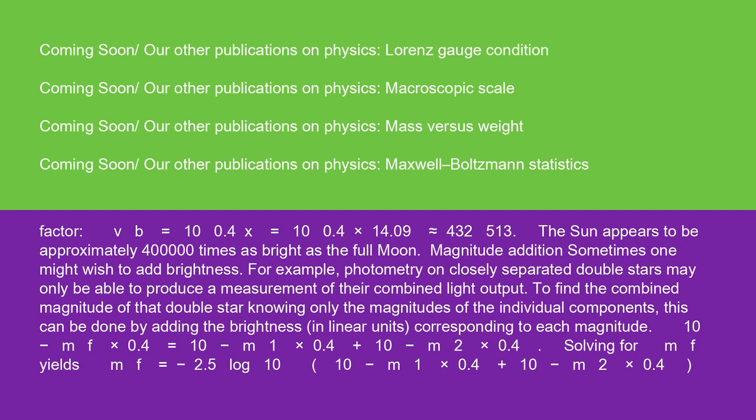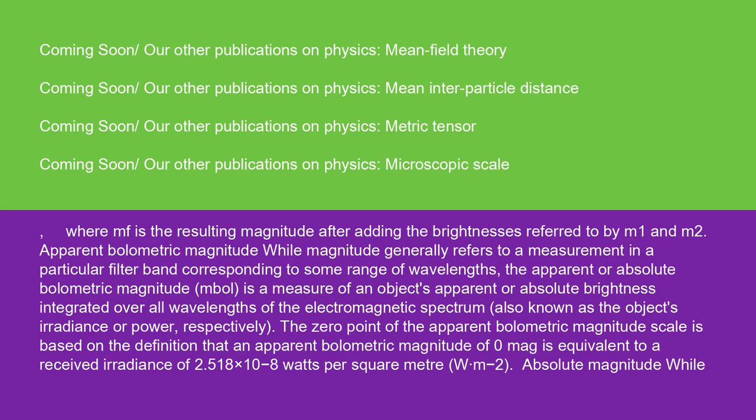Magnitude addition: Sometimes one might wish to add brightness. For example, photometry on closely separated double stars may only be able to produce a measurement of their combined light output. To find the combined magnitude of that double star knowing only the magnitudes of the individual components, this can be done by adding the brightness in linear units corresponding to each magnitude: 10^(-mf×0.4) = 10^(-m₁×0.4) + 10^(-m₂×0.4). Solving for mf yields mf = -2.5 log₁₀(10^(-m₁×0.4) + 10^(-m₂×0.4)), where mf is the resulting magnitude after adding the brightnesses referred to by m₁ and m₂.